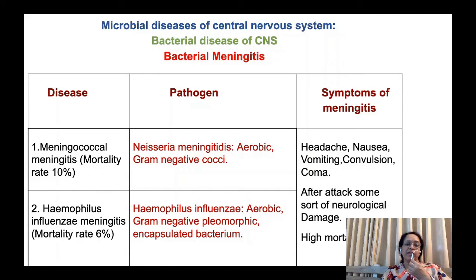Neisseria meningitidis is a gram-negative, cocci-shaped, aerobic organism which causes meningococcal meningitis. Mortality rate during childhood is more than 10%. Symptoms of meningitis include severe headache, nausea, vomiting, convulsions, and coma. Severity may change depending upon the type of infection. After attack, some neurological damage is also observed. There is a high mortality rate depending upon type of infection and the immune status of the person.